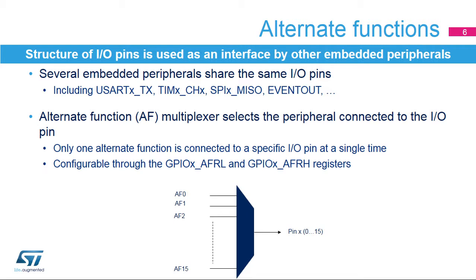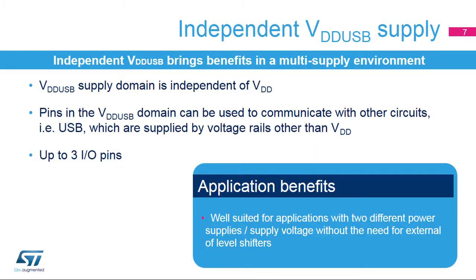Several integrated peripherals, such as the USART, Timers, SPI, and others, share the same I/O pins in order to interface with the external environment. Peripherals are configured through an alternate function multiplexer, which ensures that only one peripheral is connected to an I/O pin at a single time. This selection can be changed while the application is running through the GPIOX AFRL and AFRH registers. The independent VDD-USB supply domain allows operation in an environment with several different logic supply voltages.